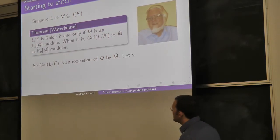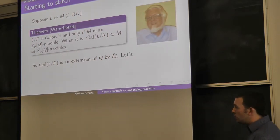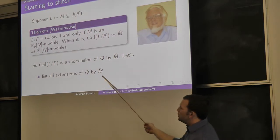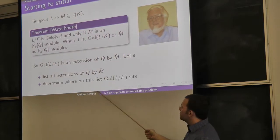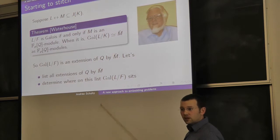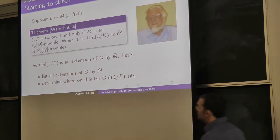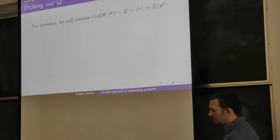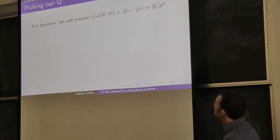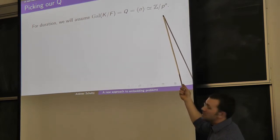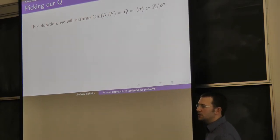For the rest of the talk, I'm going to focus on one particular group for Q: a cyclic group of order p to the n, with sigma as the name for its generator.